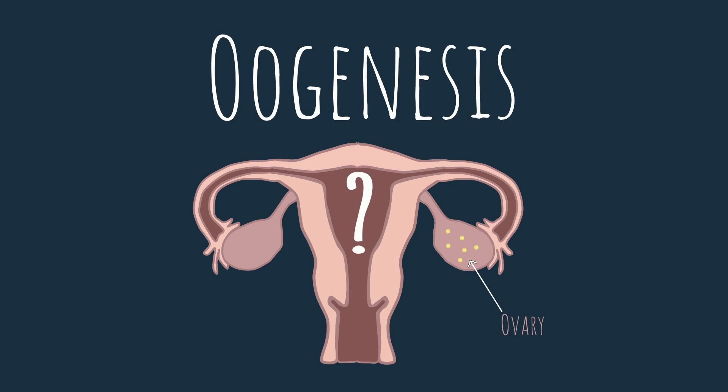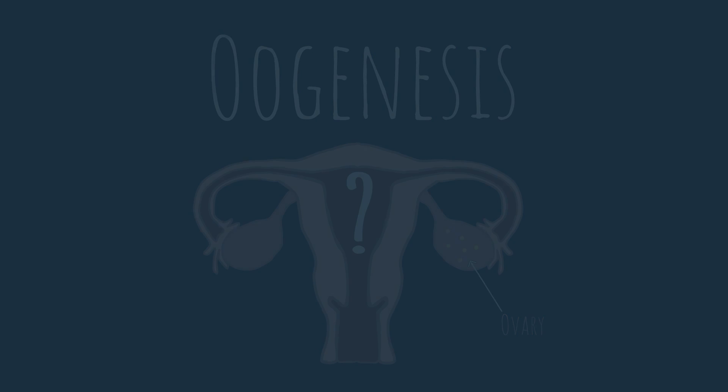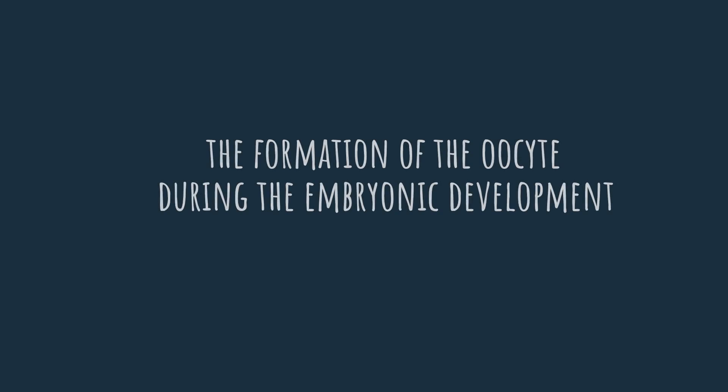But when in the female's life do the oocytes begin to develop? Now this might come as a bit of a surprise, because there's a common belief that the oocytes are formed in puberty. But this is not the case. The development of the oocytes begins years and years before puberty, during embryonic development. And this is exactly what we want to dedicate this lesson to — to see how the oocytes are formed in the very early stages of embryonic development.